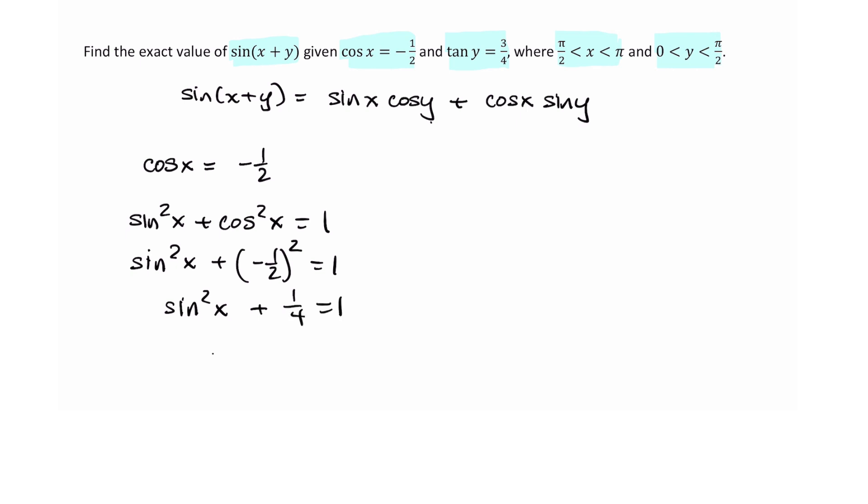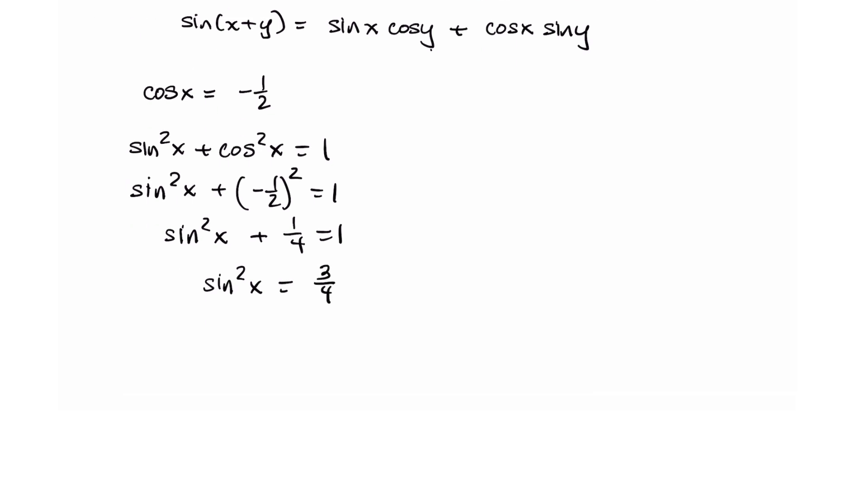So subtract one-fourth from both sides. And now apply the square root to both sides. That means sine of x normally is plus or minus the square root of three-fourths, which is plus or minus square root three over two.